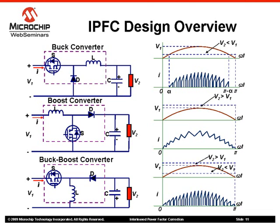The preferred method of implementing PFC and Interleaved PFC is the boost converter, due to the reduced current ripple, simplicity of the gate driver implementation, and because it meets output voltage requirements. The discontinuous conduction mode of buck and buck-boost topologies would have a negative influence on the total harmonic distortion, or THD, and also a higher gate driver cost.